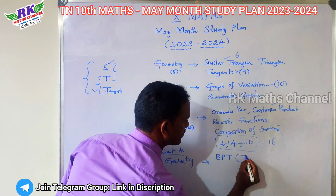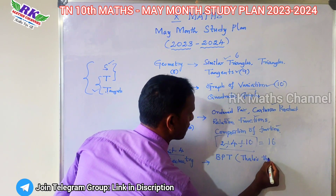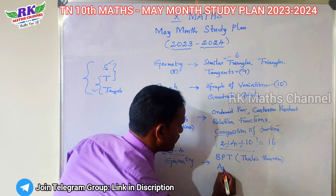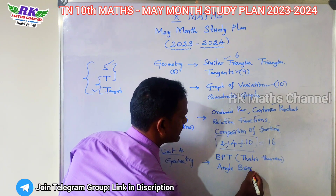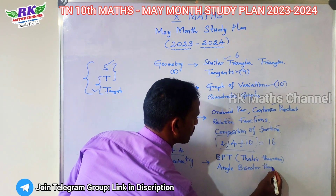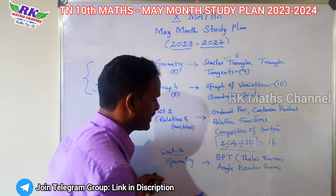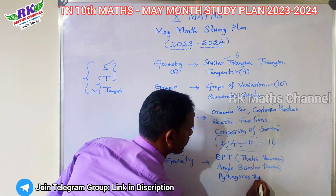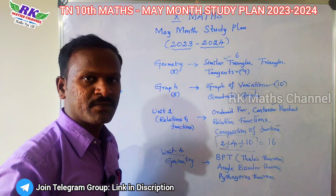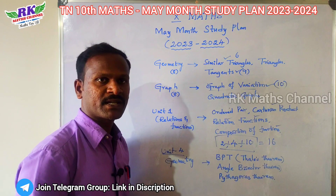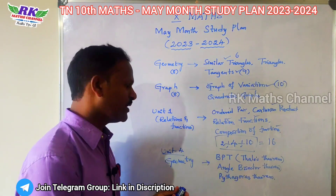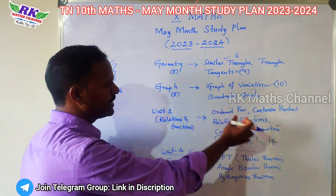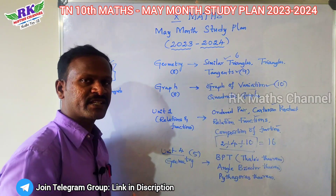This is BPT — Basic Proportional Theorem, also called Thales' theorem. BPT is the Basic Proportional Theorem. Next is the Angle Bisector Theorem. Next is Pythagoras Theorem. Confirm — in the public exam you will see the same topics. We see the same: 32.5 and 37 marks.